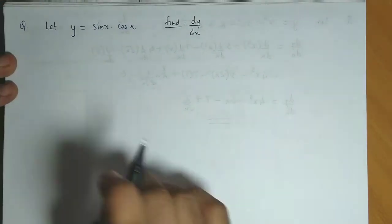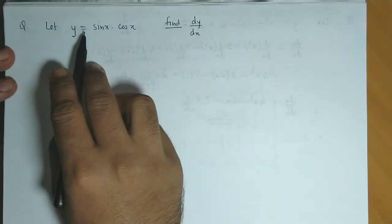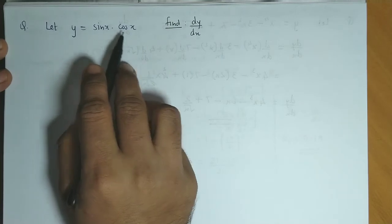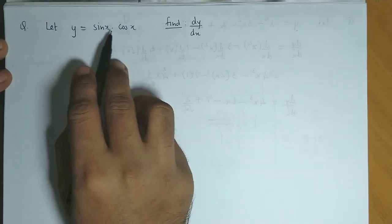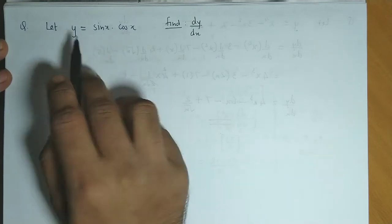In this question, we have to obtain dy/dx where y equals sin x times cos x. Here there exists multiplication between two functions, so we use the multiplication rule to obtain the value for dy/dx.